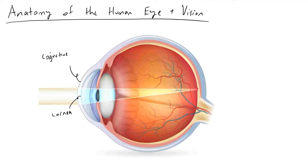The cornea is another transparent layer of cells that will let light pass through it and it's specialized. The cornea will also help bend the light slightly, because our goal at this point is to take incoming light rays and focus them — make them converge onto one of the cells on the back of our retina that we're going to get to in a little bit.